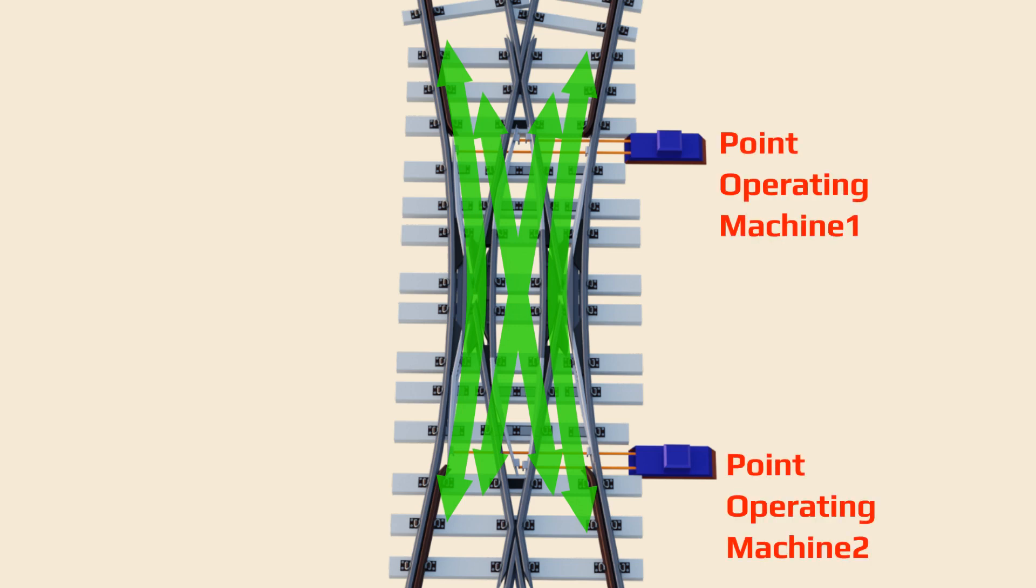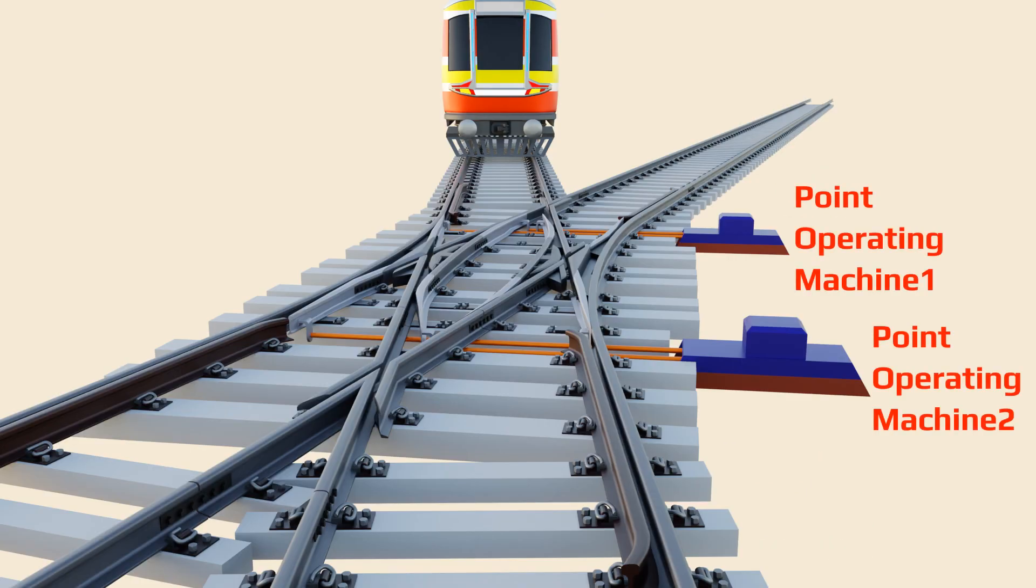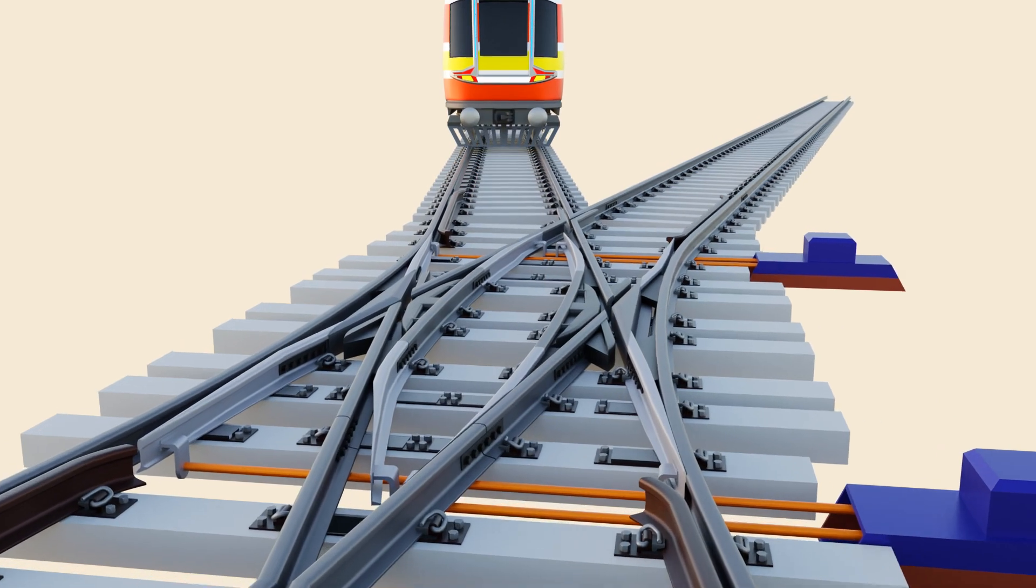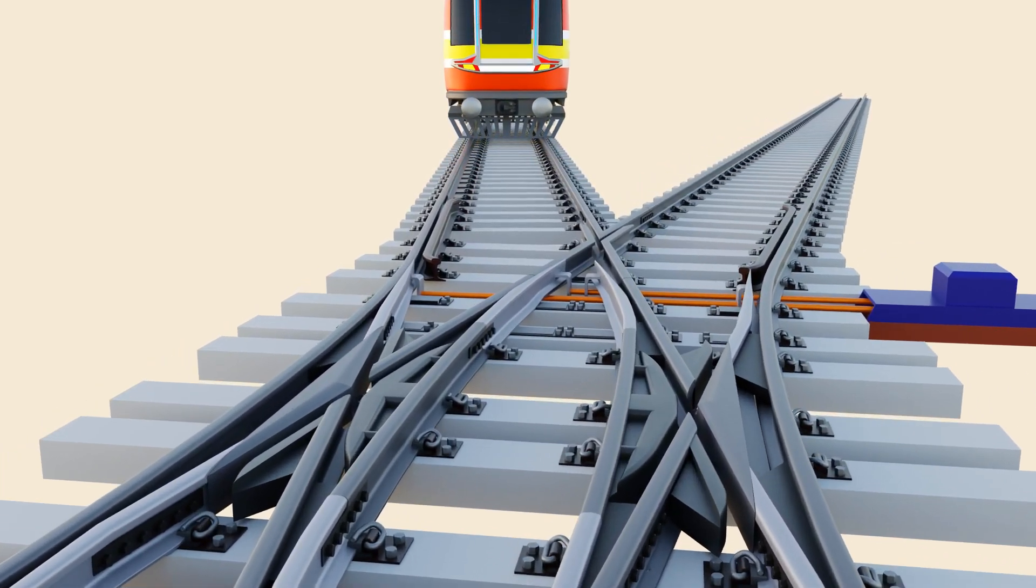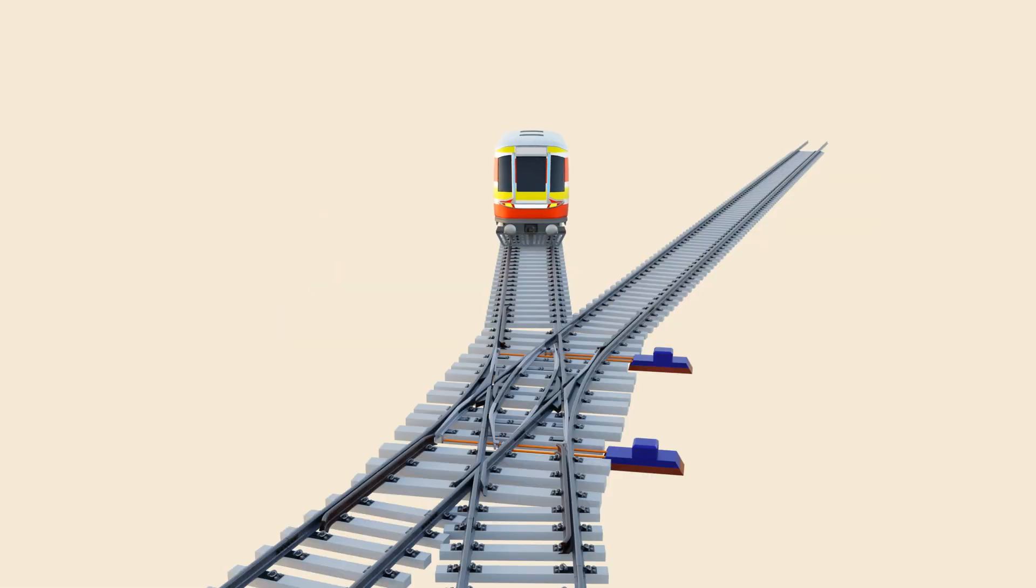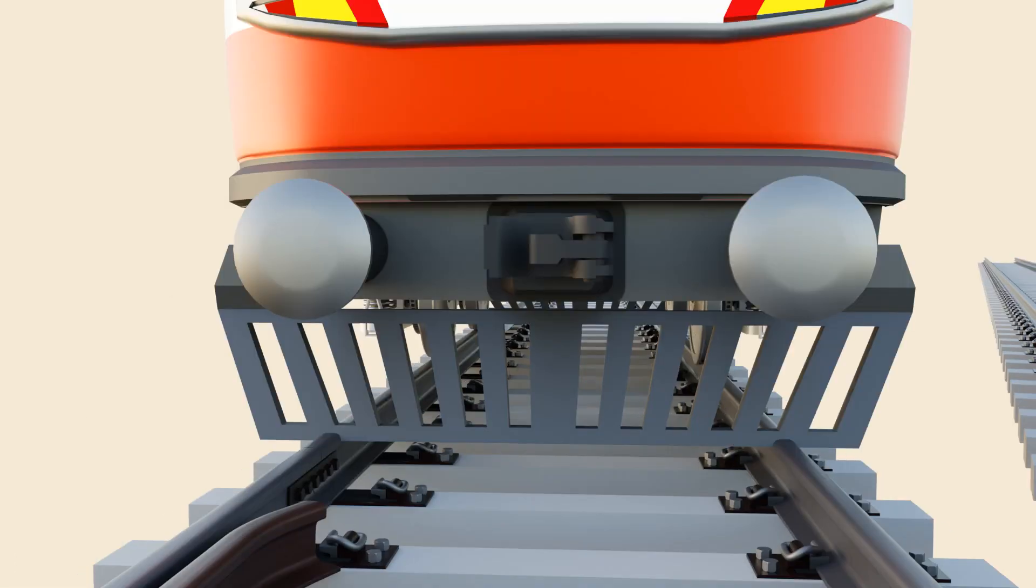This is done by adjusting switch blade positions using point operating machines. Here, let's try to guess which way the train will go. You can clearly notice this side is closed, another side is open. It means the train will be guided to the straight track.